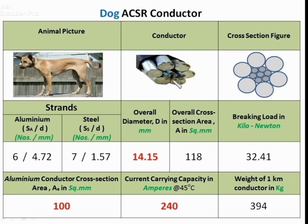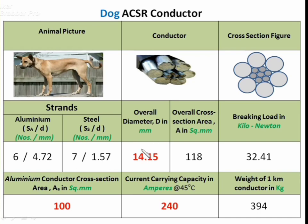The conductor cross-section looks like this: internal strands are steel and the outer ones are aluminium. The aluminium strands are six in number with 4.72 mm diameter; steel strands are seven with 1.57 mm diameter. Overall diameter is 14.15 mm. Total cross-section area of the conductor is 118 mm², breaking load is 32.41 kN, and only aluminium conductor cross-section area is 100 mm².